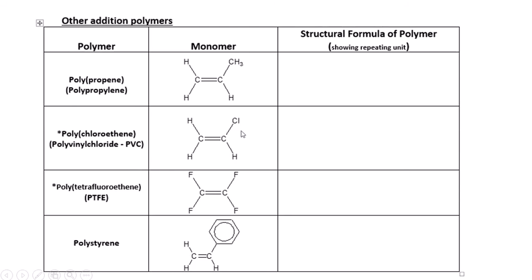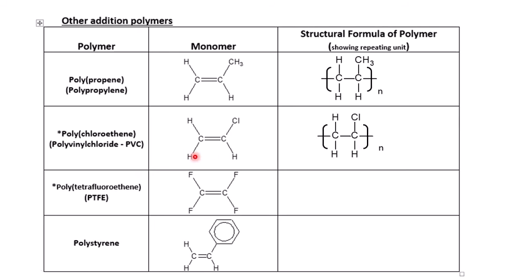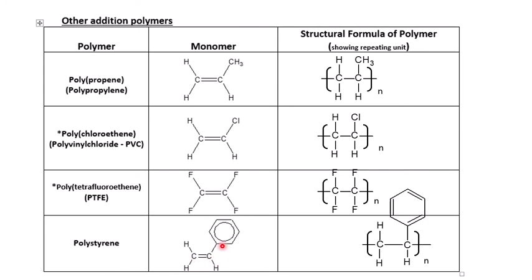You could pause the video and practice drawing polymer structures from the monomers. Polypropene is the propene monomer with the pi bond removed and bonds extended, repeated n times. Polychloroethene (polyvinyl chloride, PVC) is formed the same way from vinyl chloride. Polytetrafluoroethene (PTFE) is the tetrafluoroethene monomer with pi bond removed, repeated n times. Polystyrene is formed from styrene, which is like ethene but with a benzene ring attached.